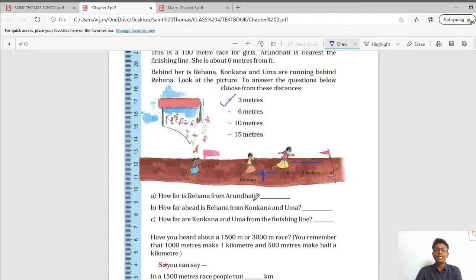Similarly, how far ahead is Rehana from Konkana and Uma? You can see the distance between the Arundhati and the finishing line is approximately equal to this distance. The answer will be 6 meter. Similarly, you can solve C question. How far are Konkana and Uma from the finishing line? This is about 6 meter, this is 3 which is equal to 9, 9 plus 6 equals to 15.